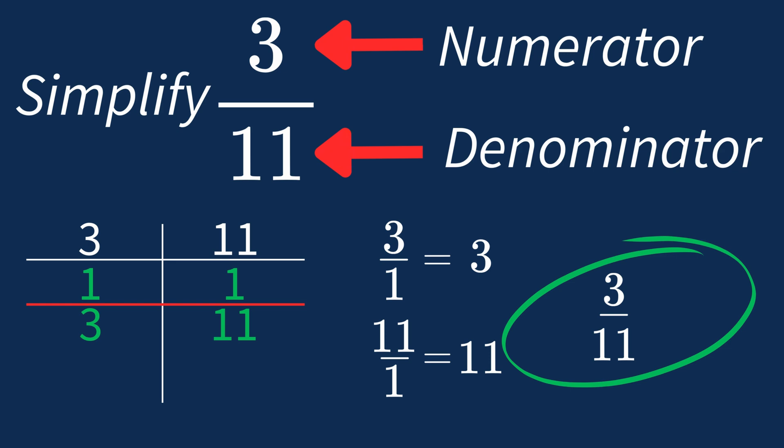In the future, if the largest common factor is 1, you already know that fraction is in its simplest form. If you'd like to learn how to convert 3 over 11 to a decimal, click the link at the end of the video.